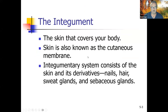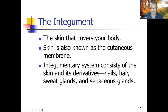The integument is the skin covering your body, also known as the cutaneous membrane. Interesting fact: it is the largest and heaviest organ in the body. The integumentary system consists of the skin and its derivatives — anything embedded in the skin: nails, hair, sweat glands, and sebaceous glands.